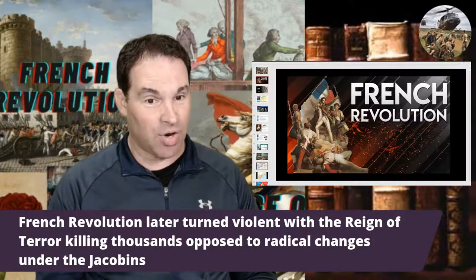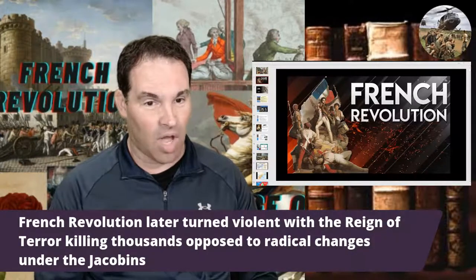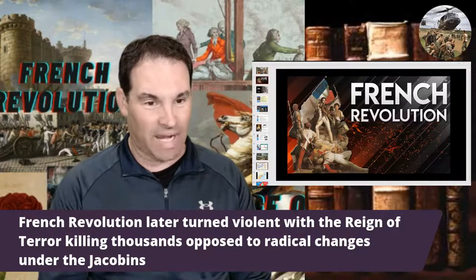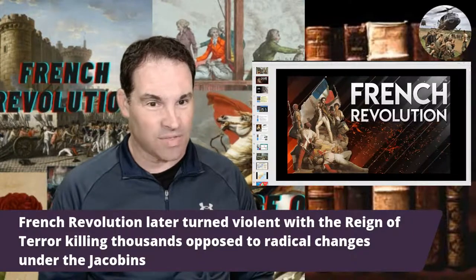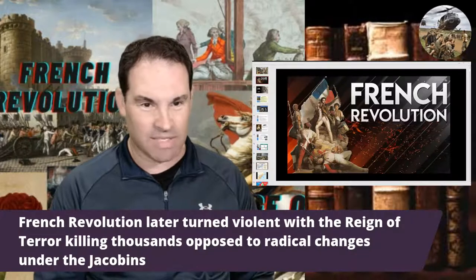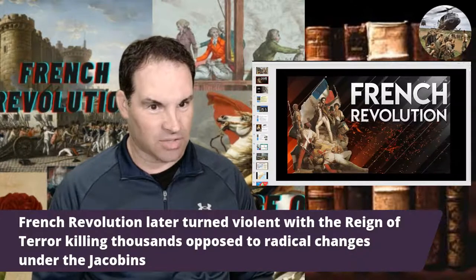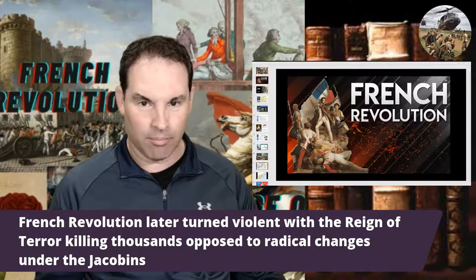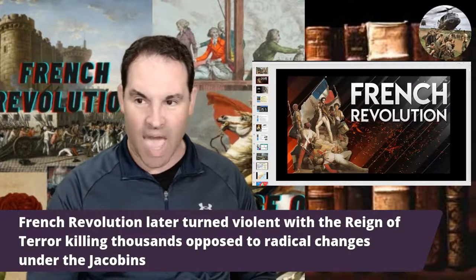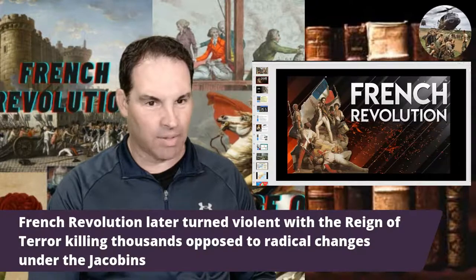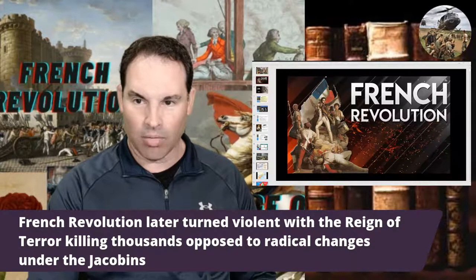France eventually moved toward a republic, although Napoleon briefly returned the country to something like a monarchy. Napoleon was known for his political reforms, like the famous Napoleonic Code. The revolution heavily affected not just France but much of Western Europe. The revolution later turned deadly and violent — we'll talk about the Reign of Terror, which killed thousands of people. It's sometimes compared to the Soviet Union under Stalin, with all those political repressions, especially when the Jacobins took over.